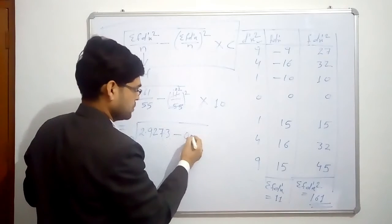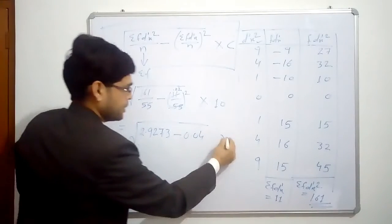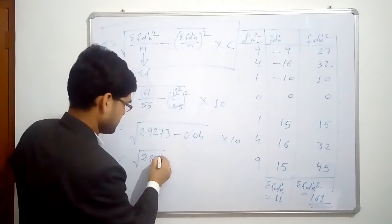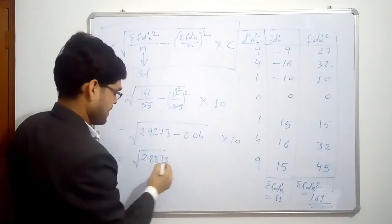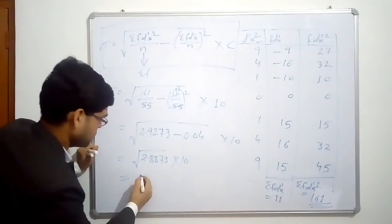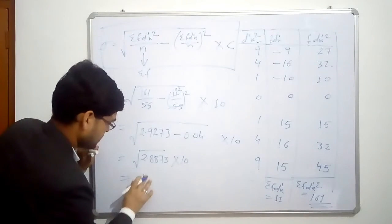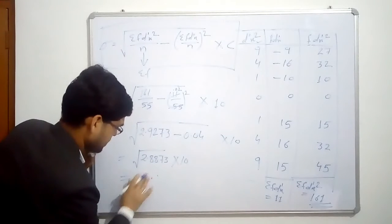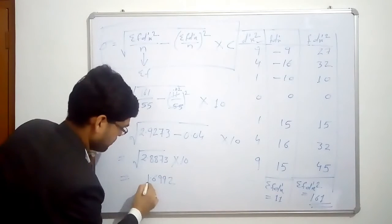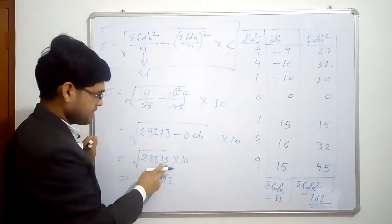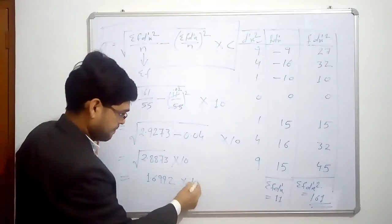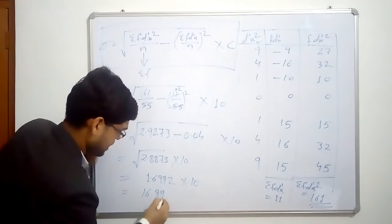So now this becomes square root of 2.8873 and this gives you answer into 10. That is equal to, this gives you 1.6992. The square root of 2.8873 is 1.6992, into 10. So our answer becomes 16.992, same as calculated in previous 2 videos.